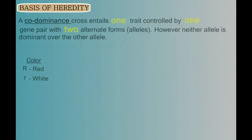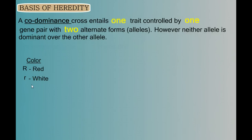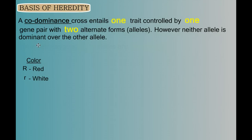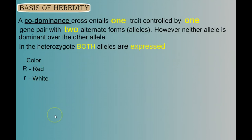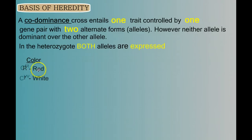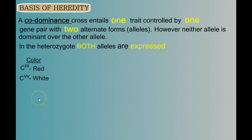Our next variation is codominance. In codominance, we once again have one trait controlled by one gene pair with two alleles, and neither allele is dominant over the other — but also, they don't blend. In the heterozygote, both of the alleles are expressed. One of the things we do in this type of cross is to change the key: instead of big R, little r, we'll use a neutral letter like C, and put a superscript R for red and a superscript W for white. This type of notation will be helpful later on as well.